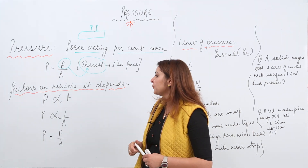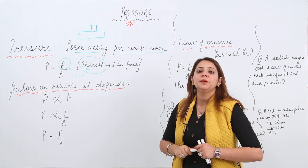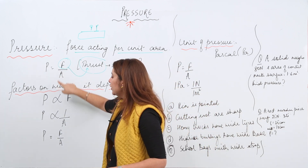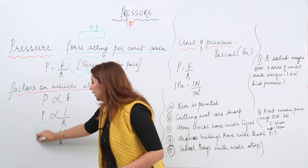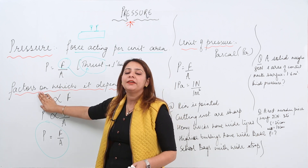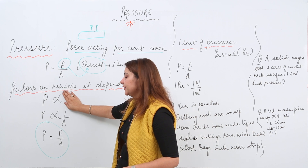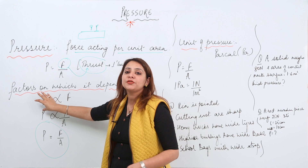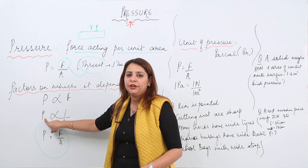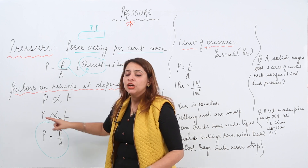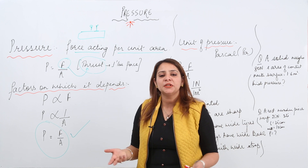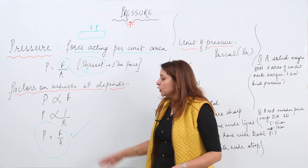From the formula P = F/A, we can identify the factors on which pressure depends. Pressure is directly proportional to force — if force increases, pressure increases by the same amount, and vice versa. Pressure is inversely proportional to area — if area increases, pressure decreases, and if area decreases, pressure increases. This gives us the formula P = F/A, where F can represent thrust or force directly.